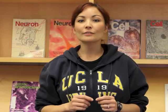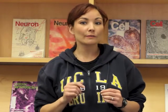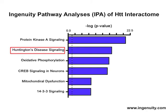In total, we identified 747 high-scoring candidate Huntington-interacting proteins from the brain. Bioinformatic analyses support the relevancy of our protein candidates to Huntington's disease. For example, using ingenuity pathway analyses, we found the second most enriched IPA pathway in our interactome to be Huntington's disease signaling, suggesting our data set is highly enriched with genes previously implicated in the disease.